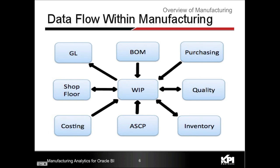Let's assume that Oracle eBusiness Suite is my ERP system. The different blue boxes you see on the screen are the different modules in Oracle eBusiness Suite. Each module has a specific role — it captures a specific set of information — and the direction of the arrowhead points to the flow of data from one module to the other. WIP, or Work in Process, is the core manufacturing module we are targeting here, and all the modules around it indicate the data flow from or to WIP.